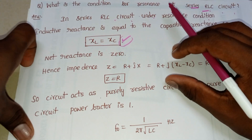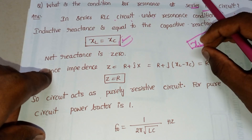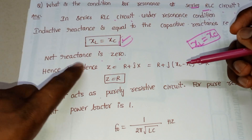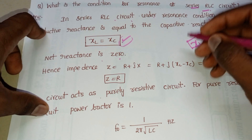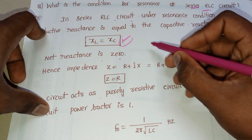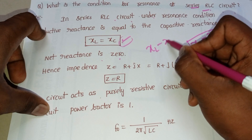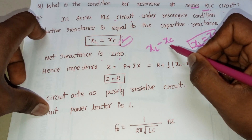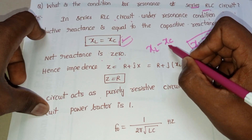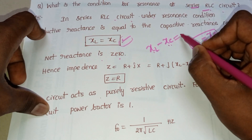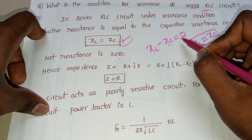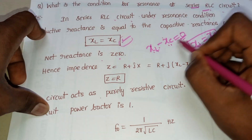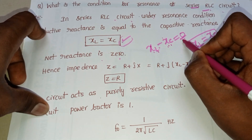The next condition is that net reactance equals zero. The total reactance of a circuit is XL minus XC — inductive reactance minus capacitor reactance. If inductive reactance equals capacitor reactance, their subtraction becomes zero. Therefore, the net reactance is equal to zero.